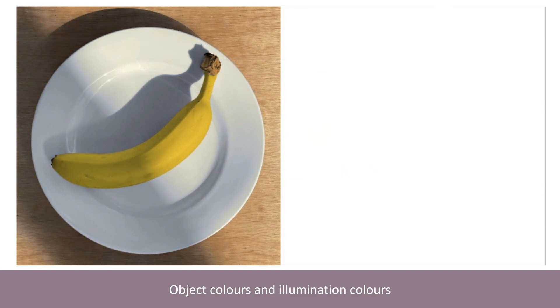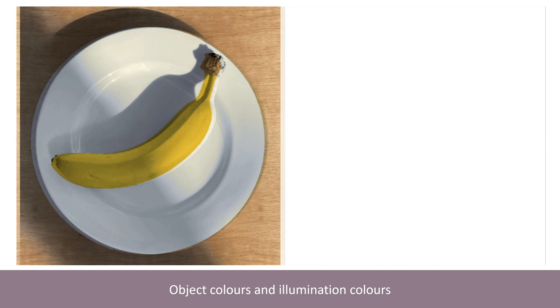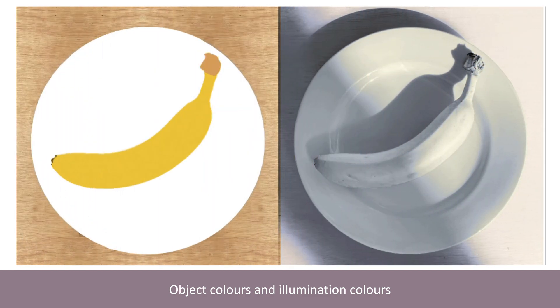Once again, we experience these perceptions of object colour and illumination colour immediately, without the need for any conscious intellectual activity. This ability to rapidly, automatically and unconsciously parse variations in the light reaching our eyes from across the visual field, into colour perceptions relating to objects and illumination, is surely the most astonishing feature of our visual system.